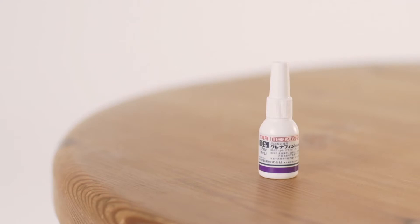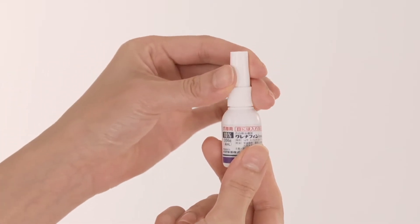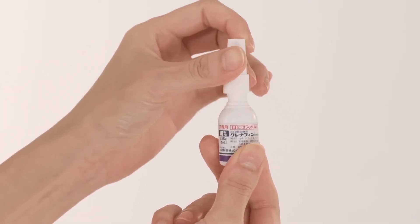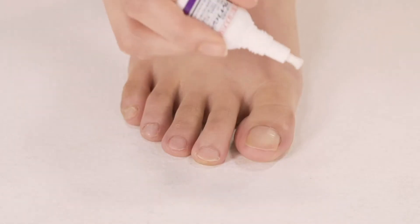Jublia is a topical drug for onychomycosis that does not require debridement of the nails. It is supplied in a built-in brush bottle for easy application. Let's take a look at how Jublia penetrates through the nail and demonstrates fungicidal activity without the need for debridement.